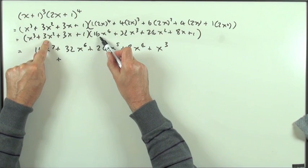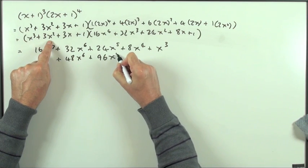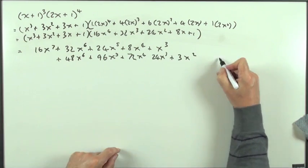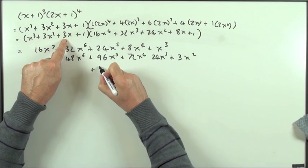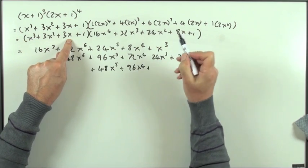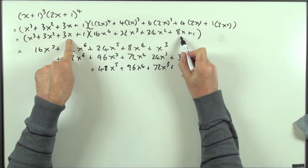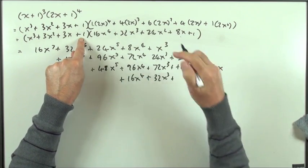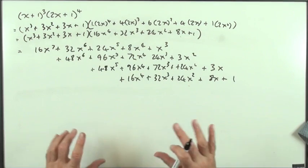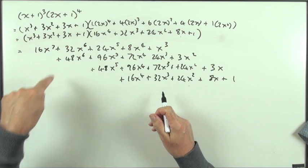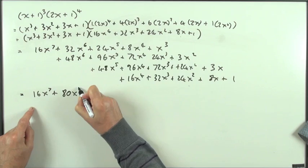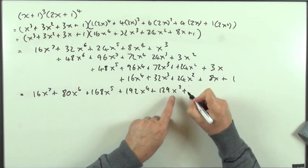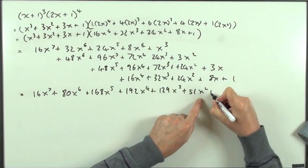So that'll be 48x to the 6, then 96x to the 5, then 72x to the 4, 24x cubed, and 3x squared. Fold it over — same numbers times 3: 48, then 96 again, then 72 for x to the 3, 24 for x squared, and 3 for x. Then the last line will just be 16, 32, 24x squared, plus 8x, plus 1. Adding them up — it's easy now, they're in columns. So that's 16x to the 7, plus 80x to the 6, plus 160x to the 5, plus 192x to the 4, plus 129x to the 3, plus 51x squared, plus 11x plus 1.